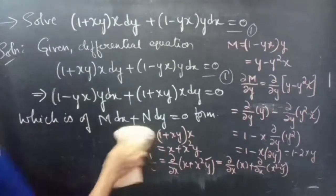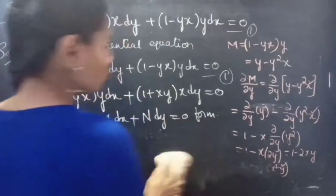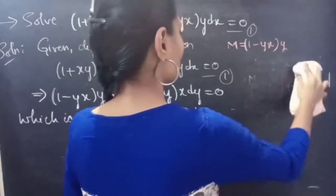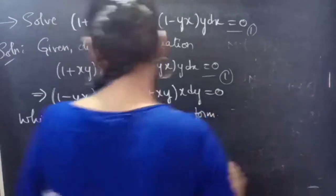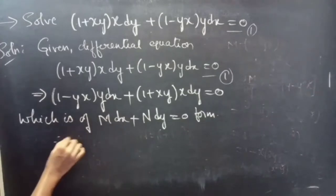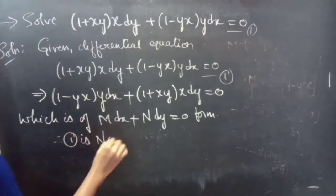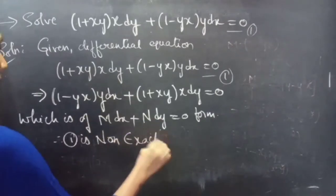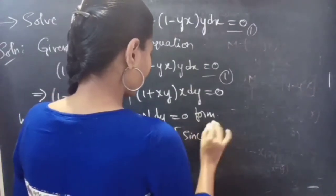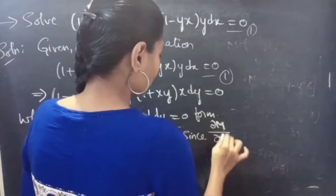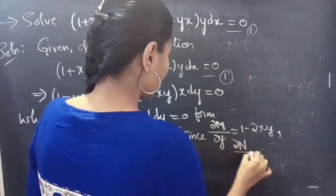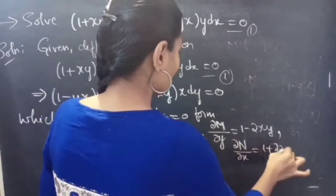Which means that the given differential equation is non-exact. So what we have to do now is reduce the given non-exact equation to an exact equation. Therefore equation (1) is non-exact, since ∂M/∂y = 1 − 2xy and ∂N/∂x = 1 + 2xy.